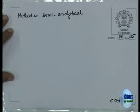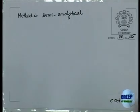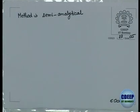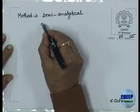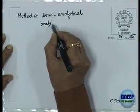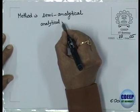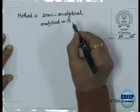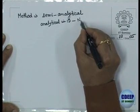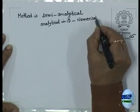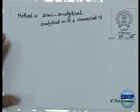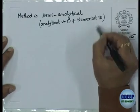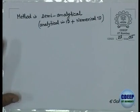Why is it semi-analytical? Because if the problem is two-dimensional, I reduce one dimension by assuming a solution analytically - that is the analytical part. So it is analytical in one dimension and numerical in the other dimension. In one direction we do analytical analysis; in the other direction we do numerical.